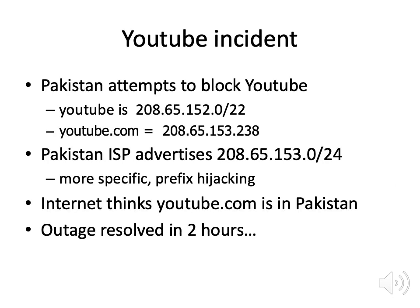Similarly, in 2010 Pakistan wanted to block YouTube. Rather than filtering traffic sent to YouTube, an ISP in Pakistan announced that they owned the path to YouTube. YouTube — Google — had announced the address block 208.65.152.0/22, meaning 10 bits for the host. Pakistan's ISP announced a more specific address, 208.65.153.0/24. Because it was more specific, the whole internet sent all traffic for YouTube to this Pakistani ISP, taking YouTube down for about two hours. Ultimately YouTube announced a more specific prefix to get traffic routed back in the right direction.